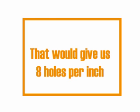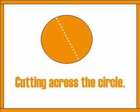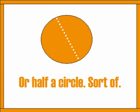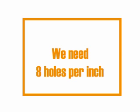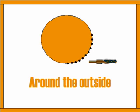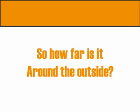So how many points will we need for a three-inch diameter hole? Three times eight gives us 24 holes, which would cut us across the diameter — but that's not what we want. We need eight holes per inch around the outside of the circle. So how far is it around the outside, and how would we know?